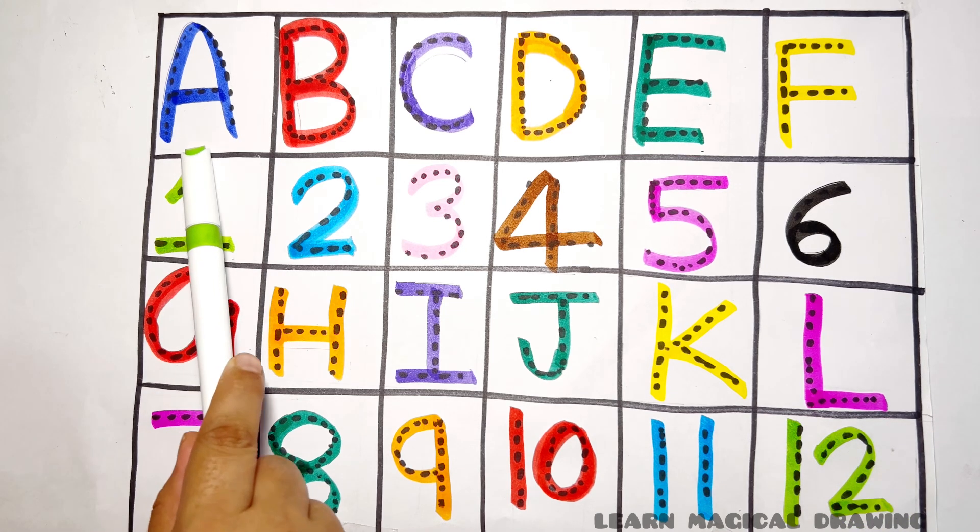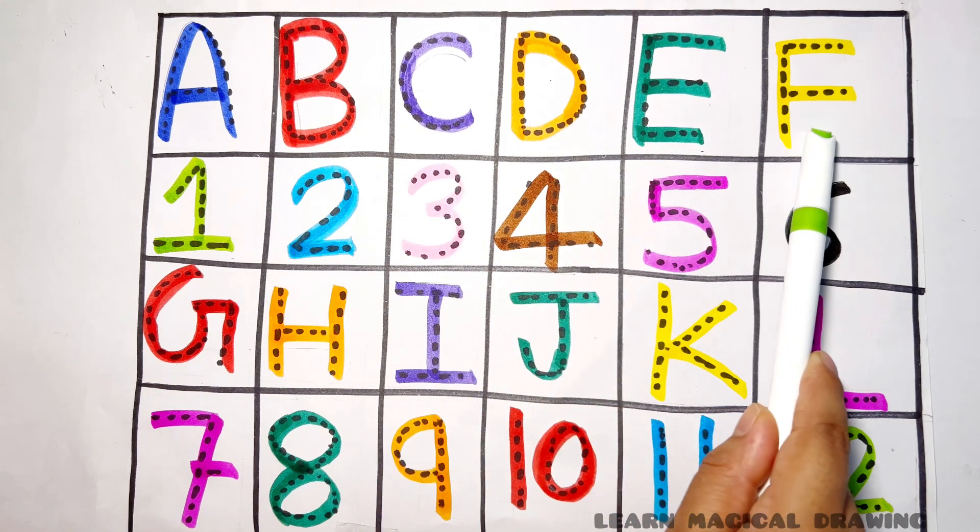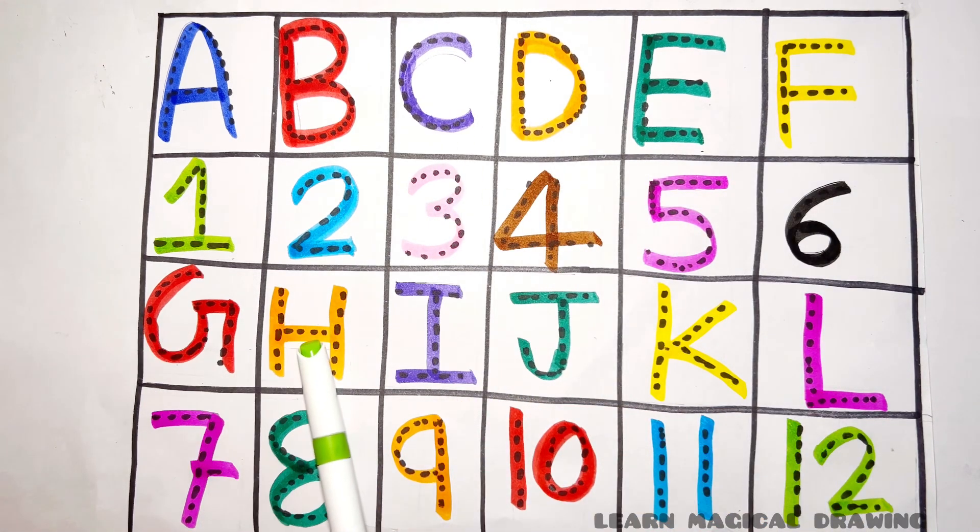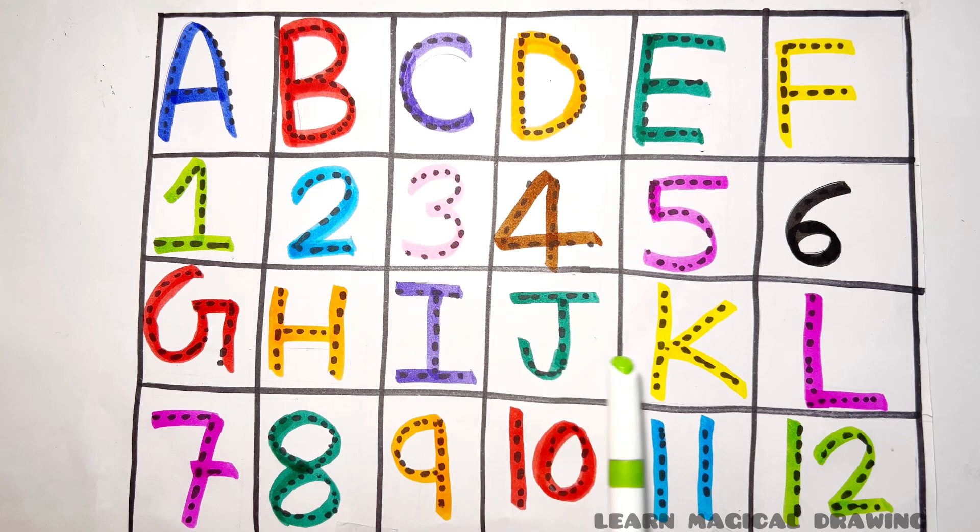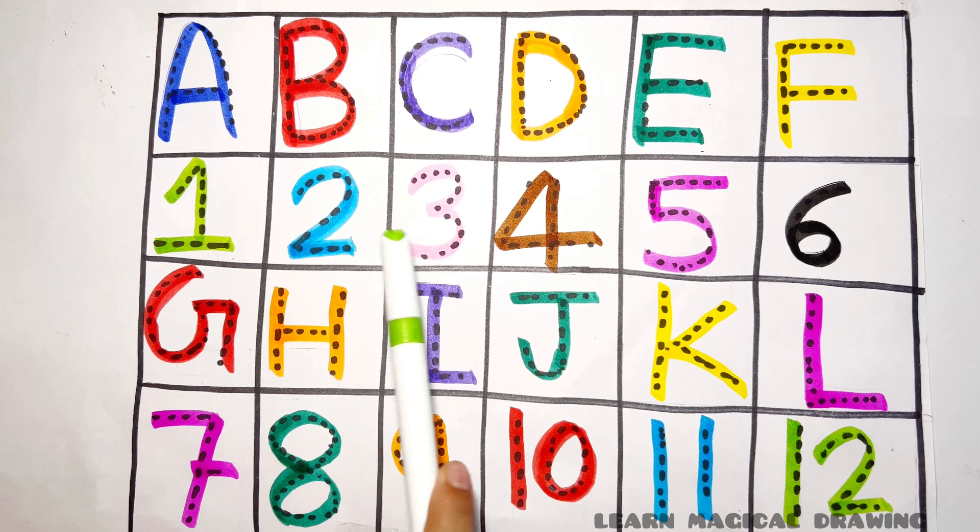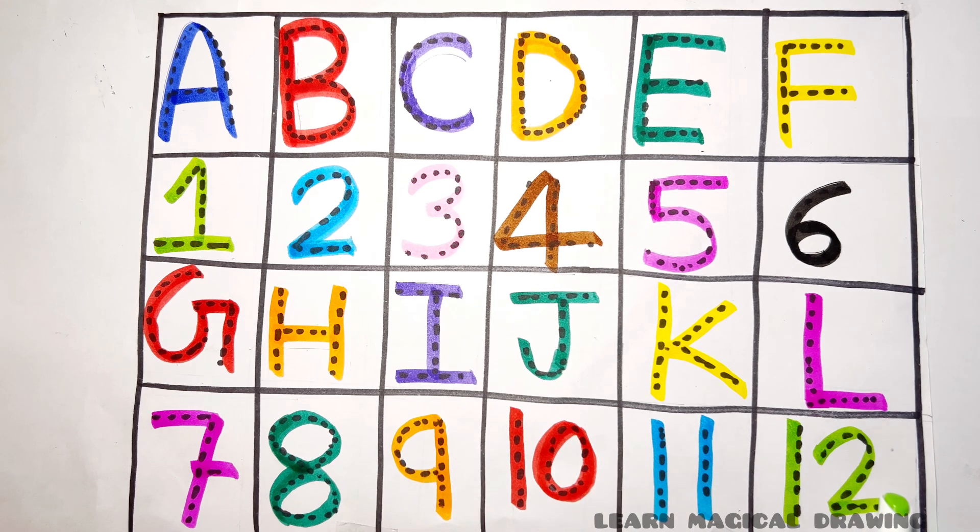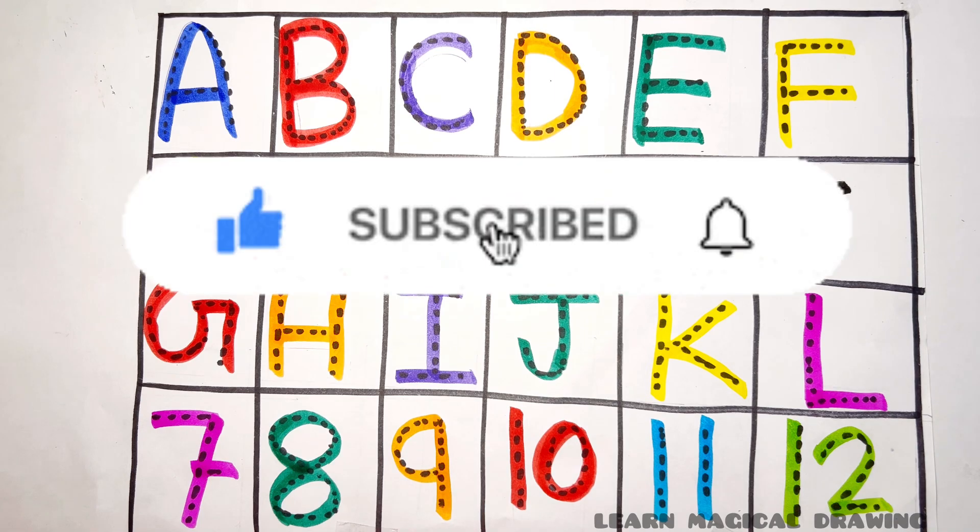Read again. A, B, C, D, E, F, G, H, I, J, K, L. 1, 2, 3, 4, 5, 6, 7, 8, 9, 10, 11, 12. Like and subscribe for more videos. Bye bye bye.